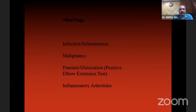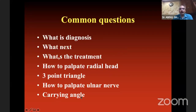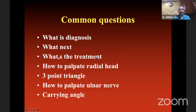Red flags: infections, inflammation, malignancy, fracture, dislocation, inflammatory arthritis, abnormal vitals, abnormal neurovascular deficit, heterotrophic ossification, and inappropriate progression after treatment. Common exam questions: What is your diagnosis? — state it fully. What next? — if history done, examine; if examination done, confirm by x-ray. What is the treatment? — it has to be based on the patient's symptoms, not just the x-ray or diagnosis. Every diagnosis does not yield the same treatment.